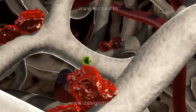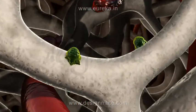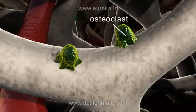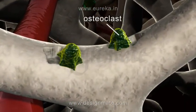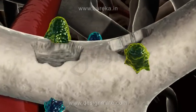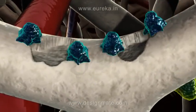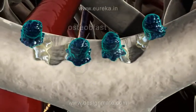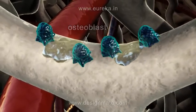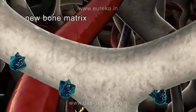A look inside the spongy bone shows some bone cells like the osteoclasts, which can resorb worn out bone tissue. Another type of cells seen is osteoblasts, which synthesize new bone matrix.